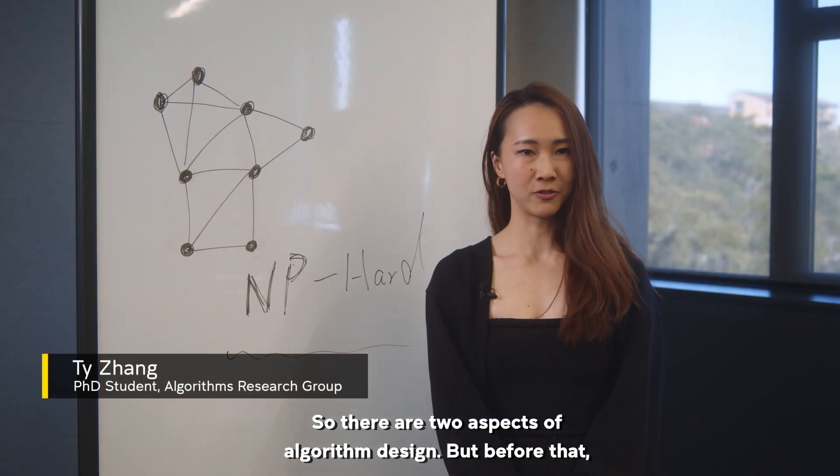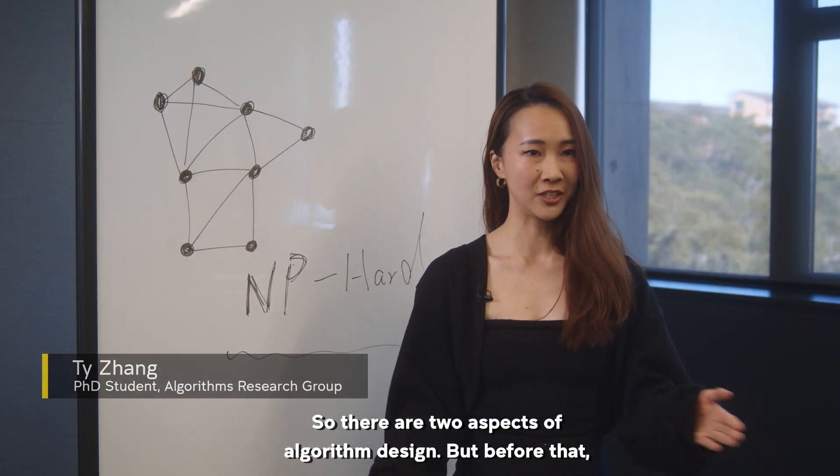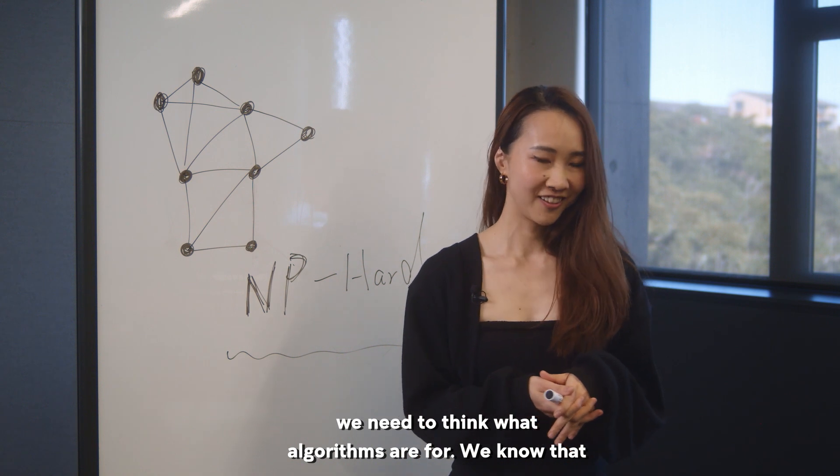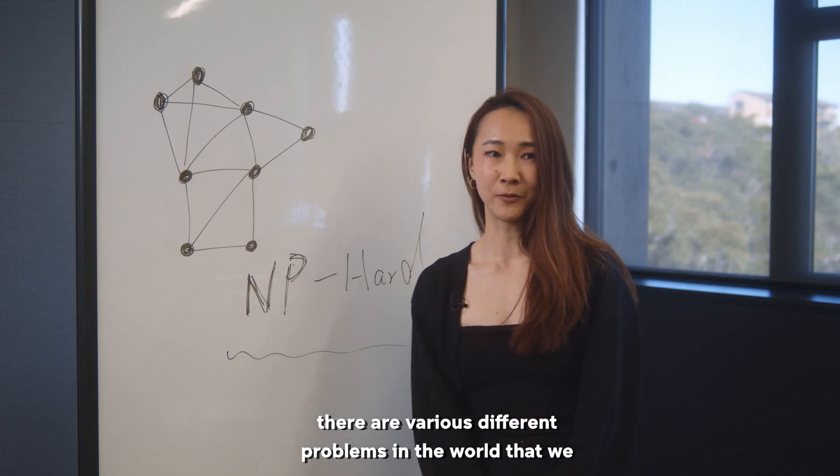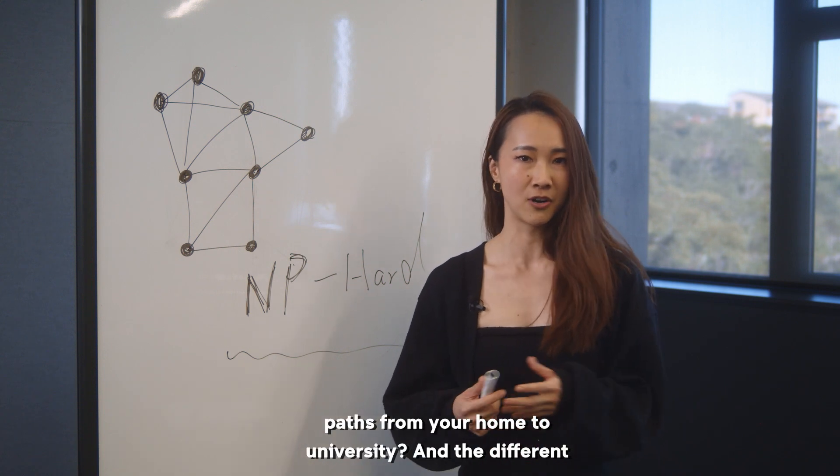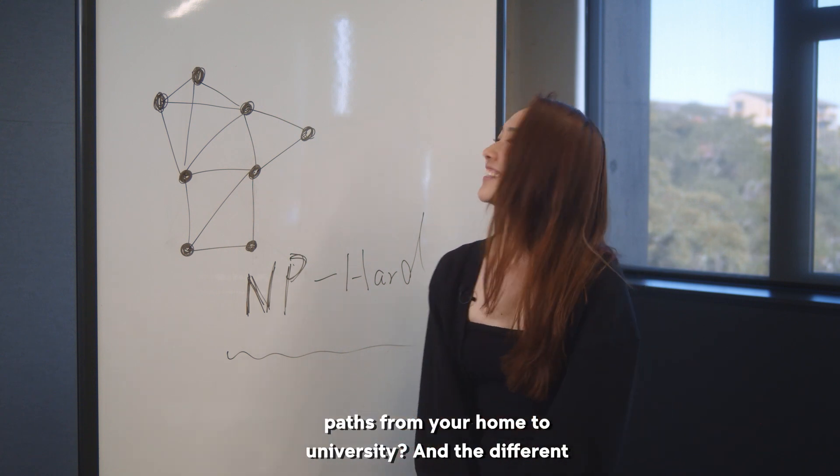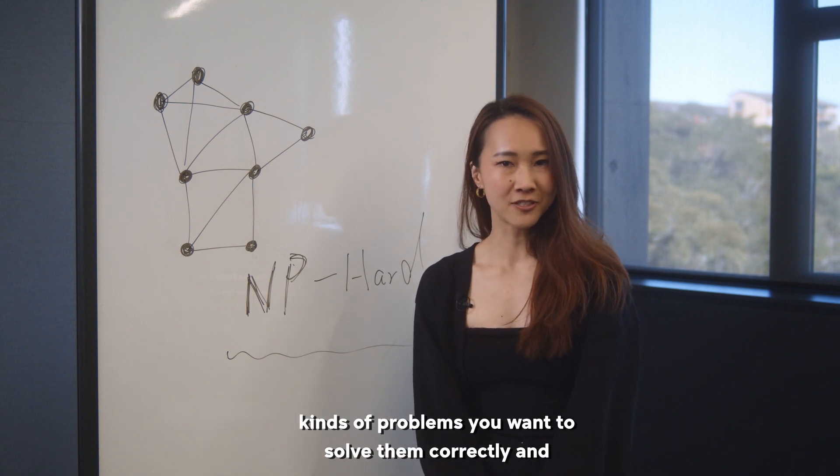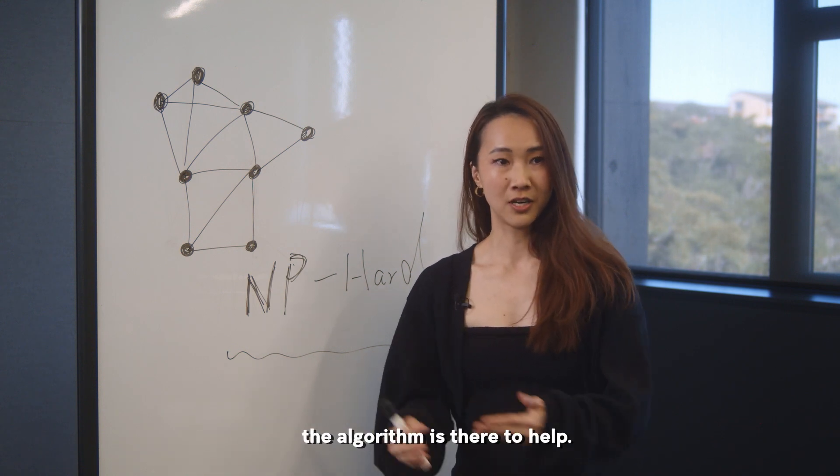There are two aspects of algorithm design, but before that we need to think what algorithms are for. We know there are various different problems in the world that we want to solve, something as small as how do you find the shortest path from your home to university. The algorithm is there to help solve these problems correctly.